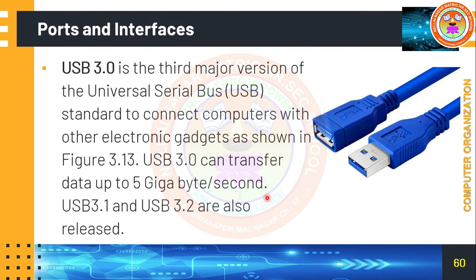USB 3.0 is the third major version of Universal Serial Bus, a standard to connect computers with other electronic gadgets. USB 3.0 can transfer data up to 5 gigabits per second, meaning data is transferred very quickly. USB 3.1 and 3.2 have also been released. Nowadays all devices have the 3.0 version or higher.